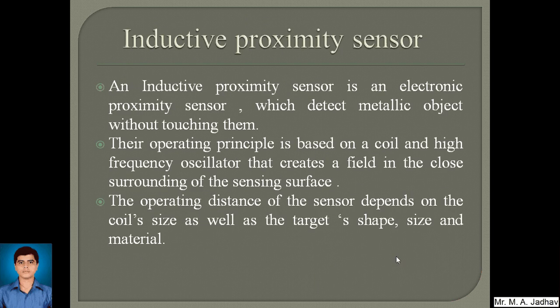First, the inductive proximity sensor. An inductive proximity sensor is an electronic proximity sensor which detects metallic objects without touching them. Its operating principle is based on a coil and a high-frequency oscillator that creates a field in the close surrounding of the sensing surface. The operating distance of the sensor depends on the coil size as well as the target shape, size and material.